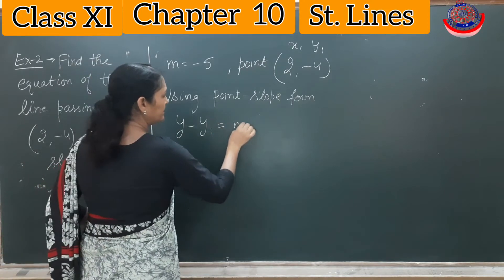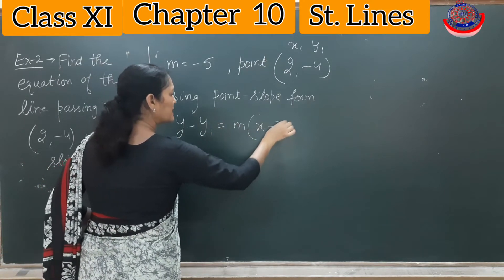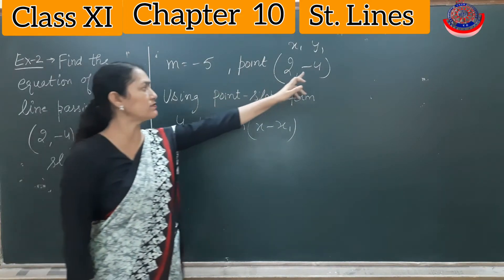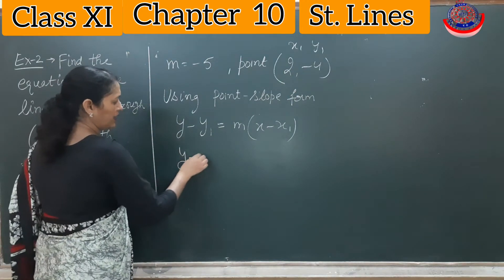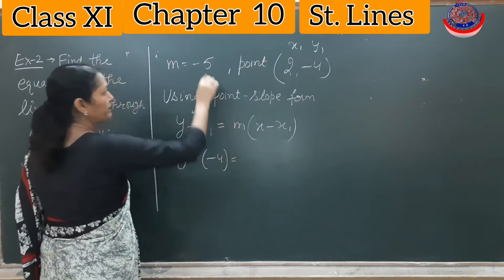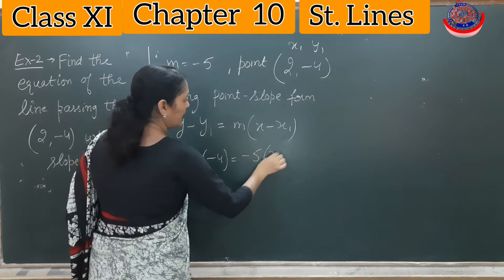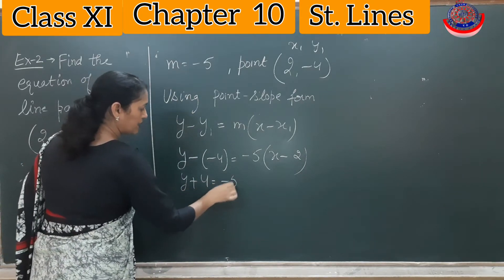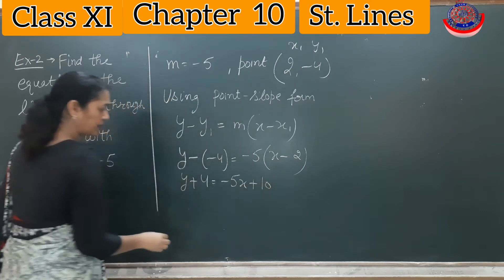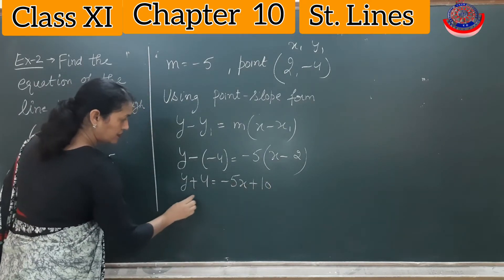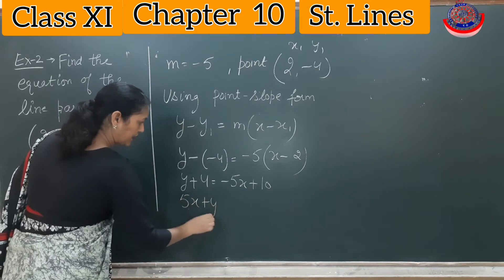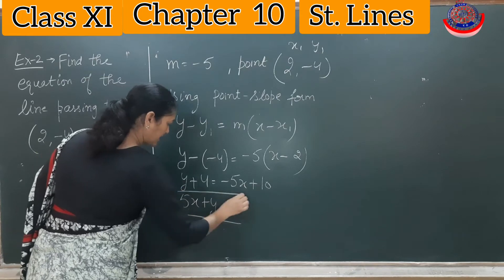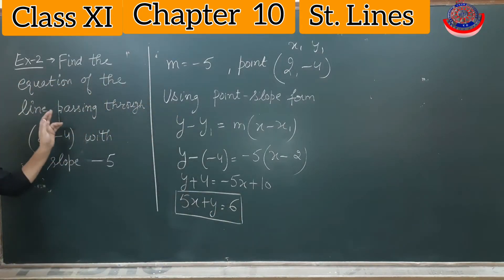Using point-slope form: y - y₁ = m(x - x₁). Here y₁ = -4, so y - (-4) = -5(x - 2), which gives y + 4 = -5x + 10. Shifting terms, we get 5x + y = 6. So the equation of the line is 5x + y = 6.